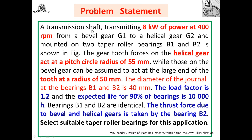A transmission shaft transmitting 8 kilowatt power at 400 RPM from a bevel gear G1 to a helical gear G2, mounted on two taper roller bearings B1 and B2. The forces on the helical gear act at a pitch circle radius of 55 mm, while those on the bevel gear act at the large end of the tooth at a radius of 50 mm. The diameter of the journal at bearings B1 and B2 is 40 mm. Load factor is 1.2 and the expected life at 90 percent reliability is 10,000 hours. Bearings B1 and B2 are identical, and the thrust force due to bevel and helical gears is taken by bearing B2. Select a suitable taper roller bearing for this application.